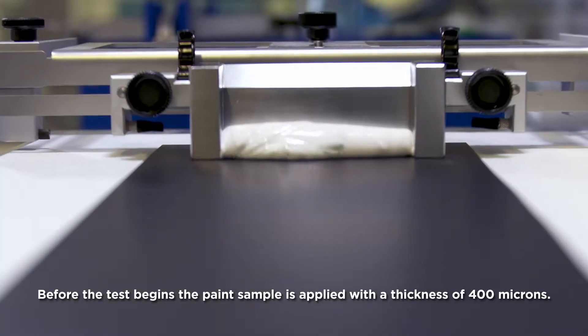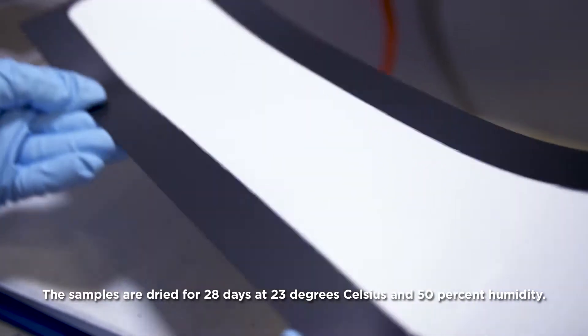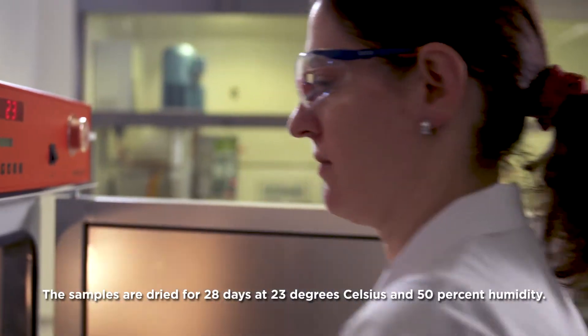Before the test begins, the paint sample is applied with a thickness of 400 microns. The samples are dried for 28 days at 23 degrees Celsius and 50% humidity.